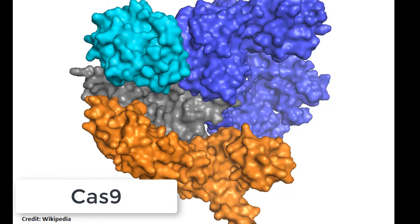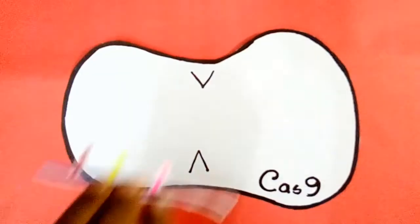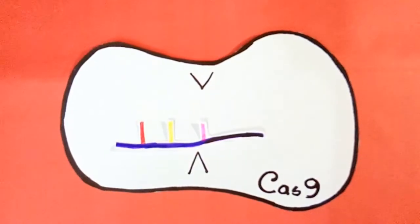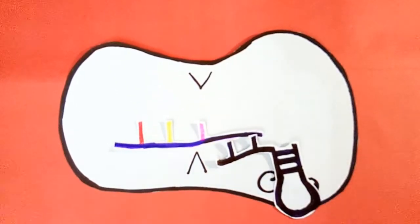The required part is sent to a protein called Cas9. Cas9 keeps it along with tracer RNA. Now the Cas9 is ready for hunting.